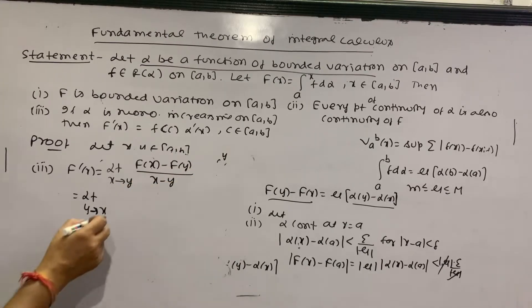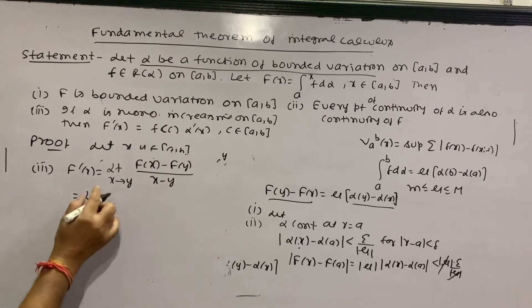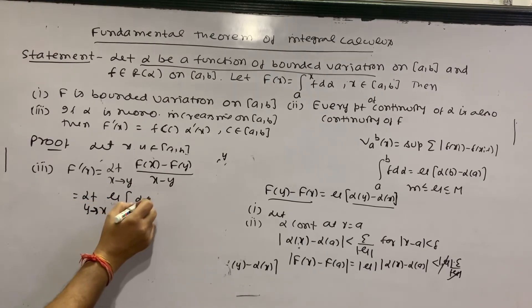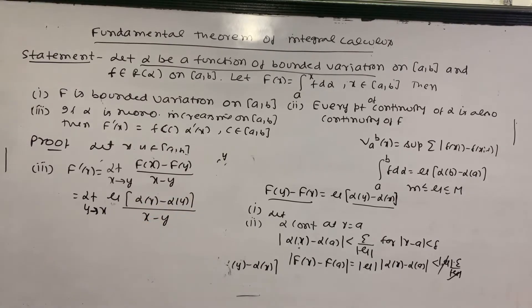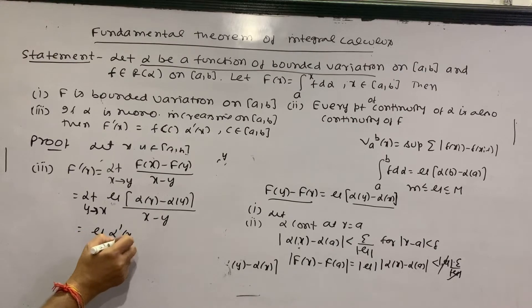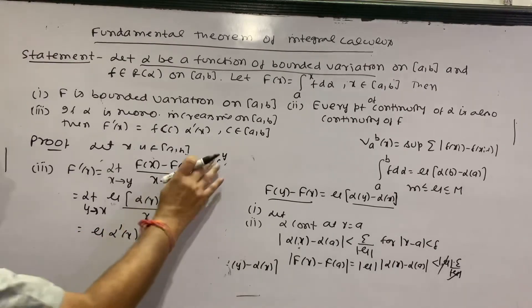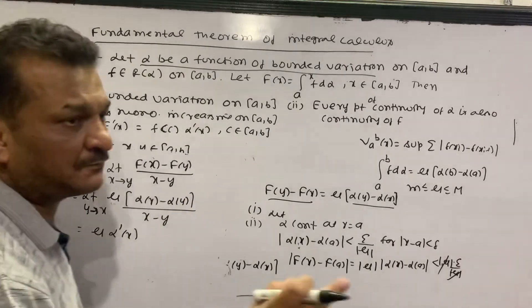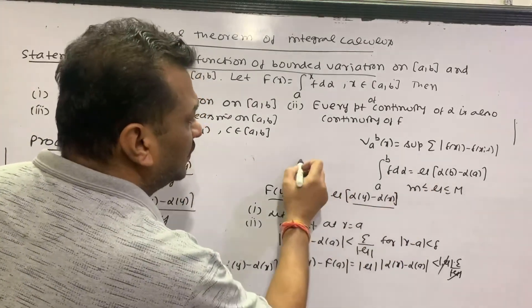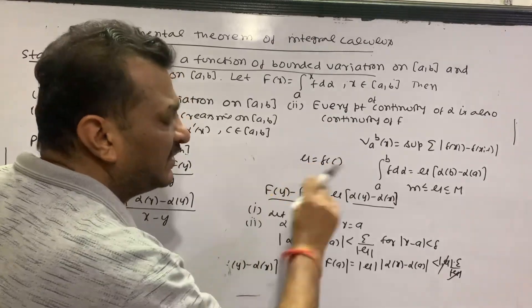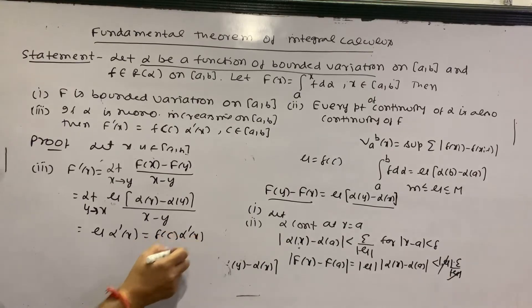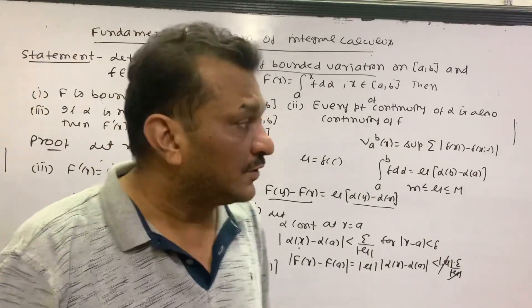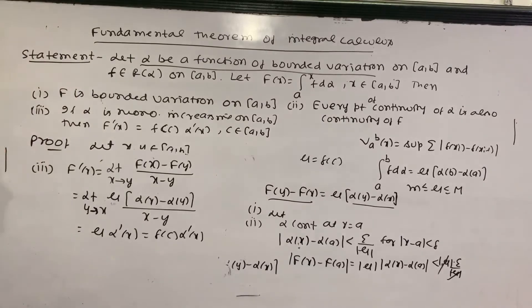So I have mu times [α(x) minus α(y)] divided by [x minus y]. According to the definition of differentiability, by the intermediate value — using the first mean value theorem — we have mu times [α(x) minus α(y)] over [x minus y], where c is a value lying between x and y. So F'(x) equals f(c) times α'(x), completing the fundamental theorem of integral calculus. Thank you very much.